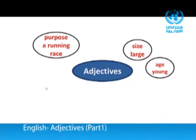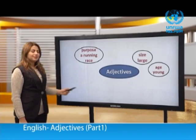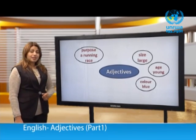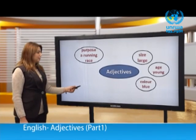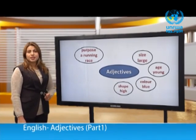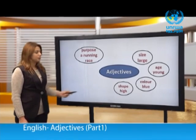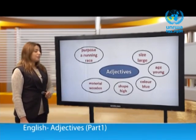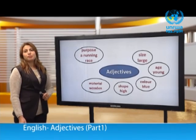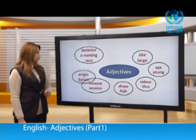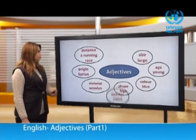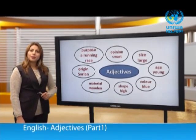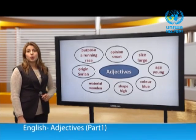Shape — for example, high or low. Material — for example, wooden or metal. Origin — like Syrian, Palestinian. And the last one: opinion — like smart or beautiful.